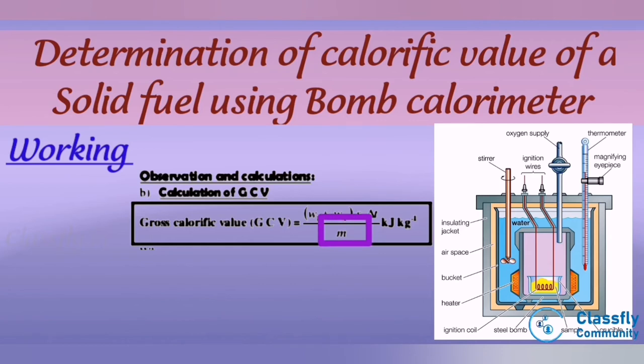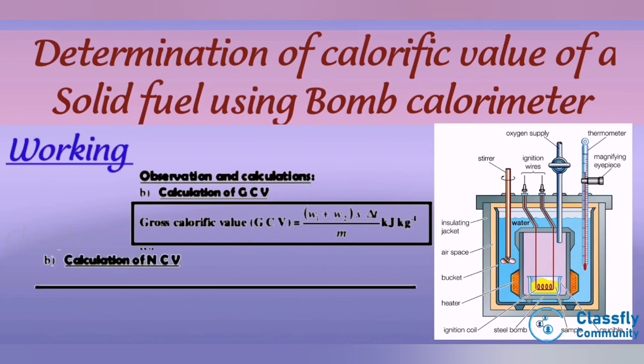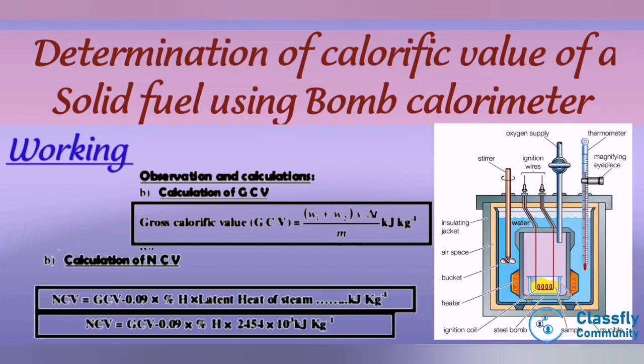The calculation formula for net calorific value is: NCV = GCV − 0.09 × (percentage of hydrogen) × latent heat of steam. That is, NCV = GCV − 0.09 × (percentage of hydrogen) × 2454 × 10³ kilojoules per kilogram.